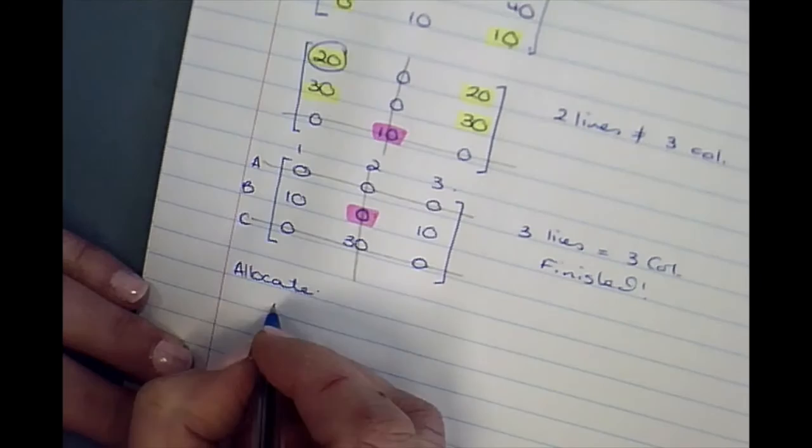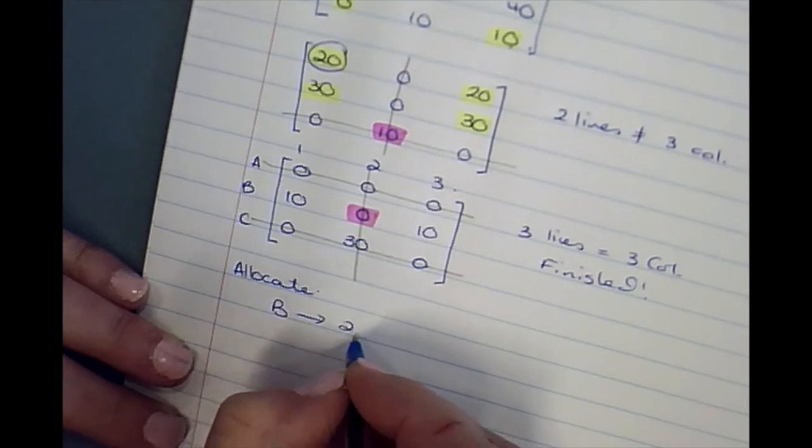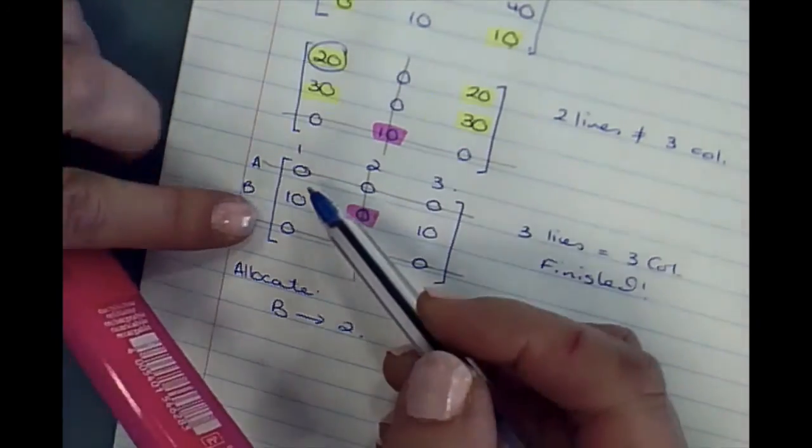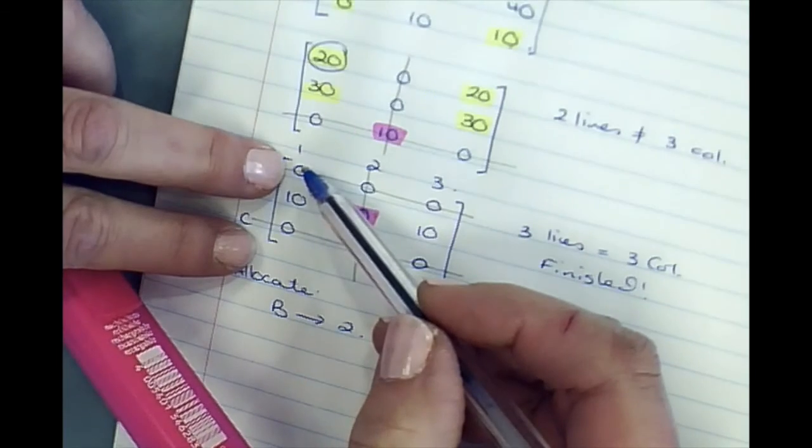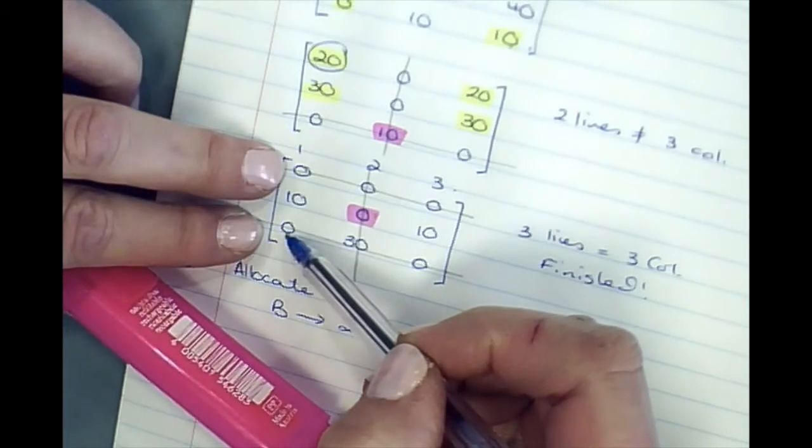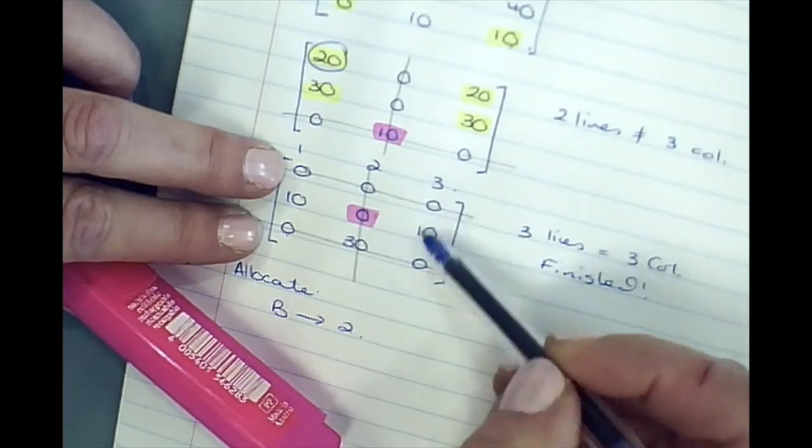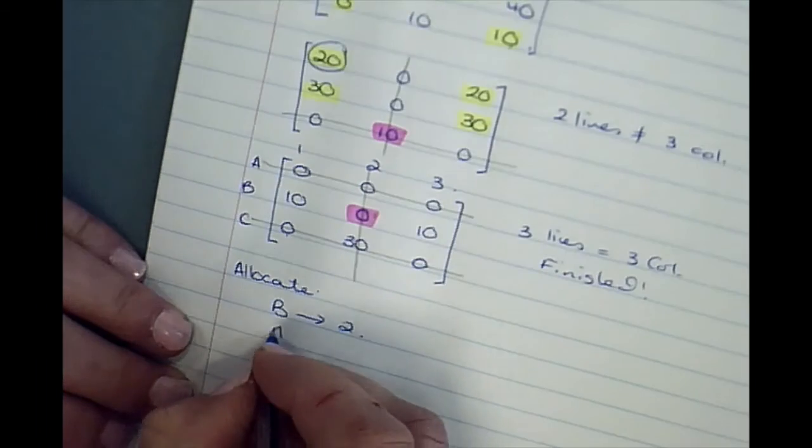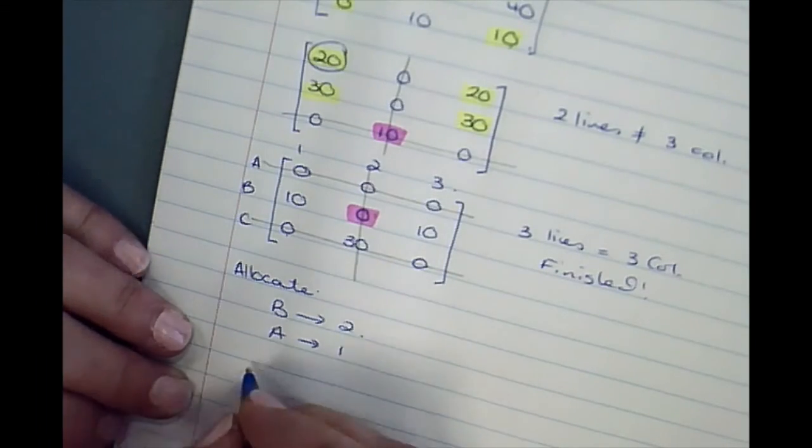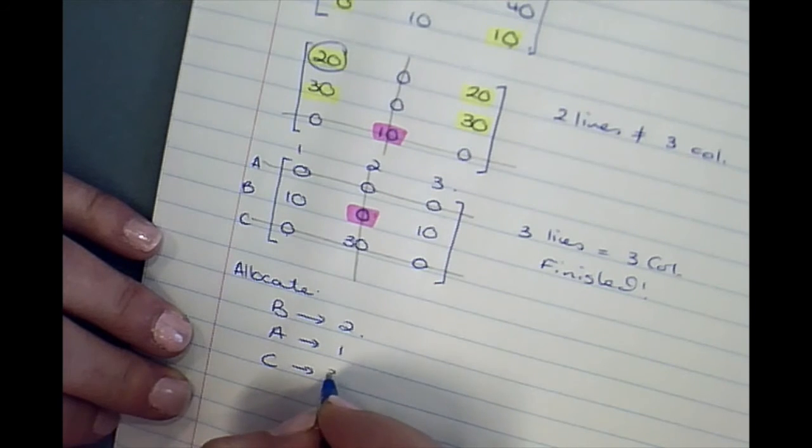B has to get job two, but I can give A or C task one or task two. So I could go A gets task one, so then C would get task three.